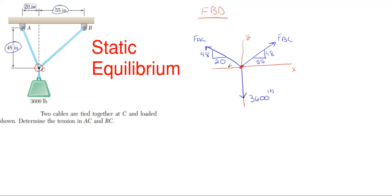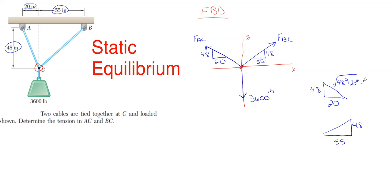The method I use is called the triangle proportional method. Whenever you have these dimension triangles, you want to fill out the hypotenuse side. For FAC we have 48 and 20, and for FBC we have 48 and 55. Using the Pythagorean theorem: 48² + 20² square-rooted gives us 52 for the first hypotenuse, and 55² + 48² square-rooted gives us 73 for the second.